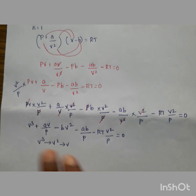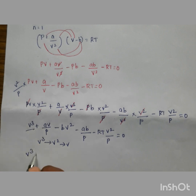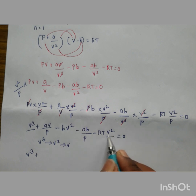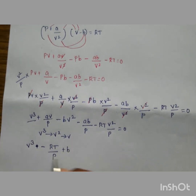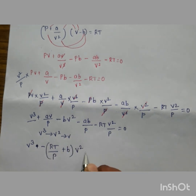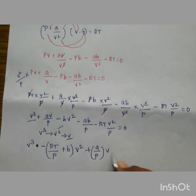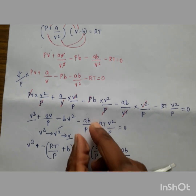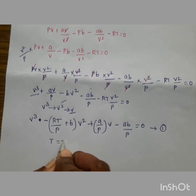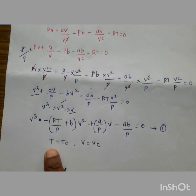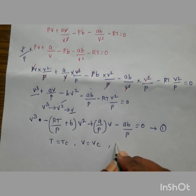Now we rearrange, collecting terms in v³, v², and v. We substitute the critical conditions: temperature is Tc, volume is Vc (the critical volume), and pressure is Pc (the critical pressure).